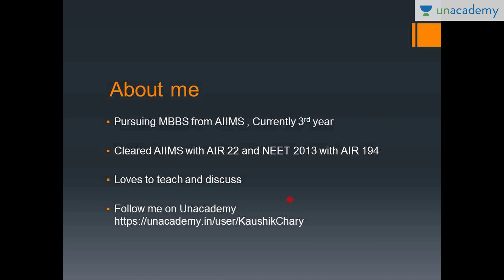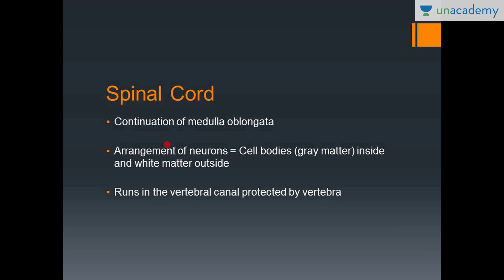The spinal cord is the continuation of the medulla oblongata. The medulla oblongata is part of the rhombencephalon, or the hindbrain, that I have taught in my previous lesson. The most important difference between the brain and the spinal cord is that the neurons in the spinal cord are arranged in the opposite way to that of the brain.